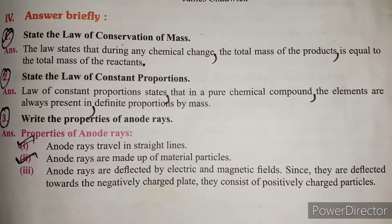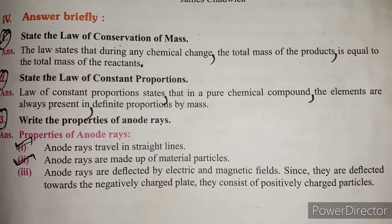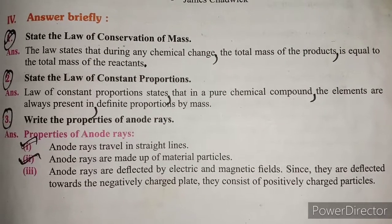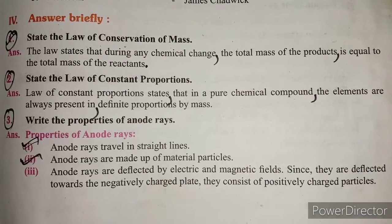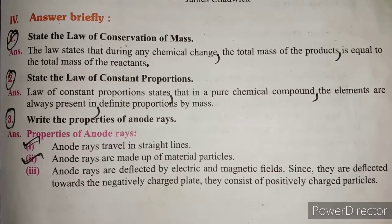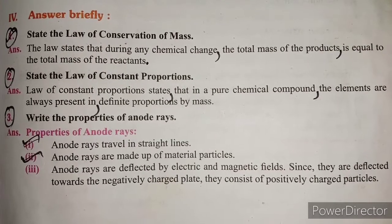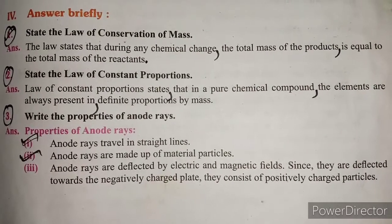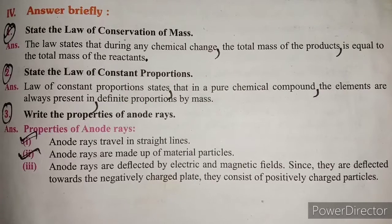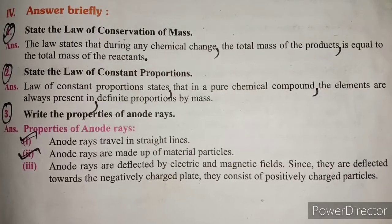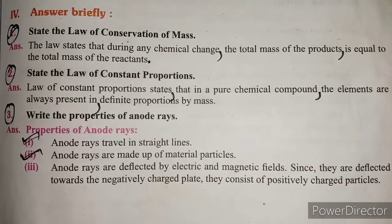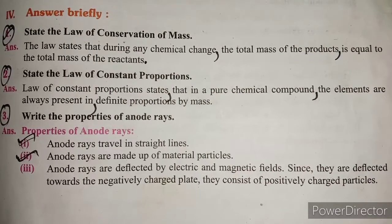Question 3: Write the properties of anode rays. Anode rays travel in straight lines. Anode rays are made up of material particles. Anode rays are deflected by electric and magnetic fields. Since they are deflected towards the negatively charged plate, they consist of positively charged particles.